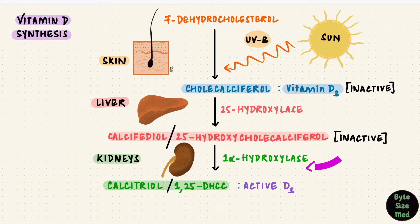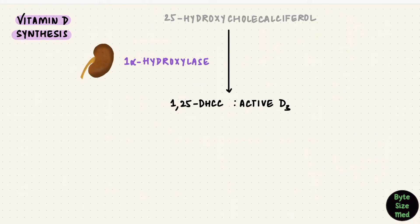But this step, the 1-alpha-hydroxylase step, is obviously very important. This is the rate limiting step. Without that, there's no active vitamin D. So that is the step that is tightly regulated in the body by three main factors: calcium, phosphate, and the parathyroid hormone. There's also negative feedback here. So if there's too much active vitamin D, it can inhibit its own activation.